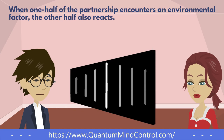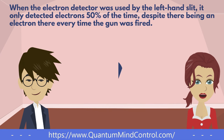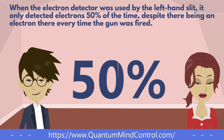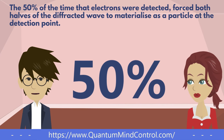When one half of the partnership encounters an environmental factor, the other half also reacts. When the electron detector was used by the left-hand slit, it only detected electrons 50% of the time, despite there being an electron there every time the gun was fired. The 50% of the time that electrons were detected forced both halves of the diffracted wave to materialize as a particle at the detection point.